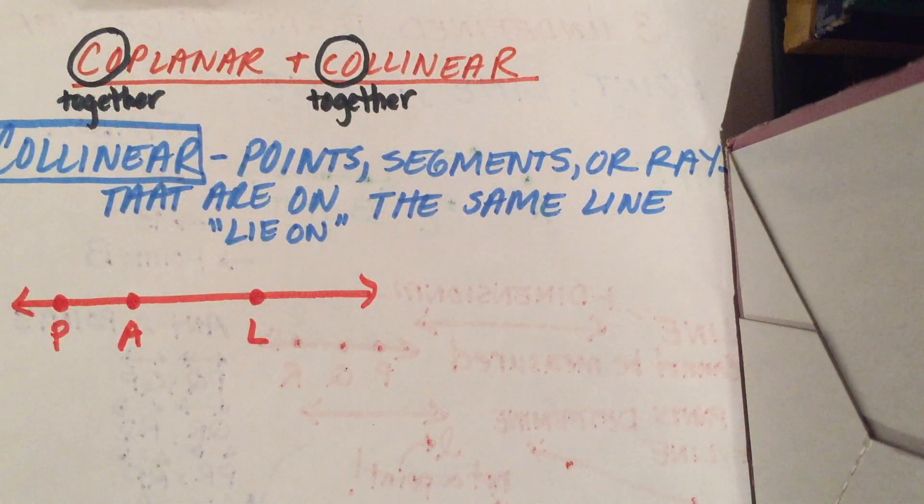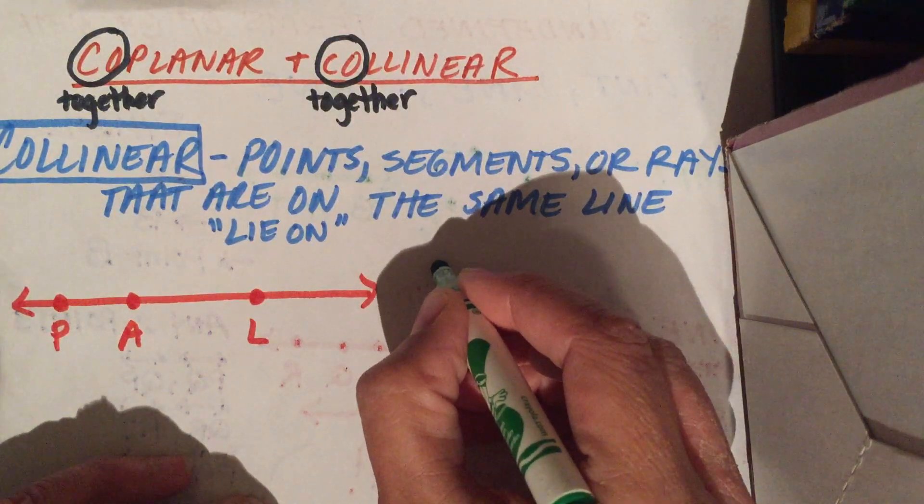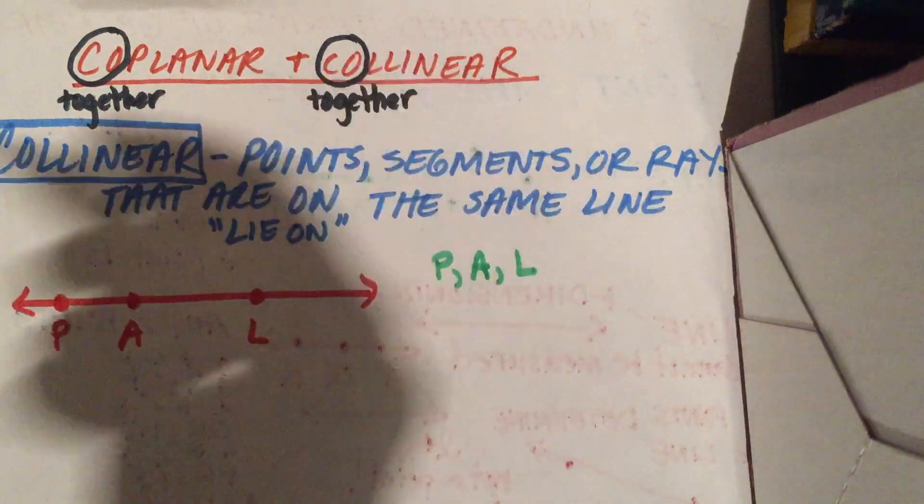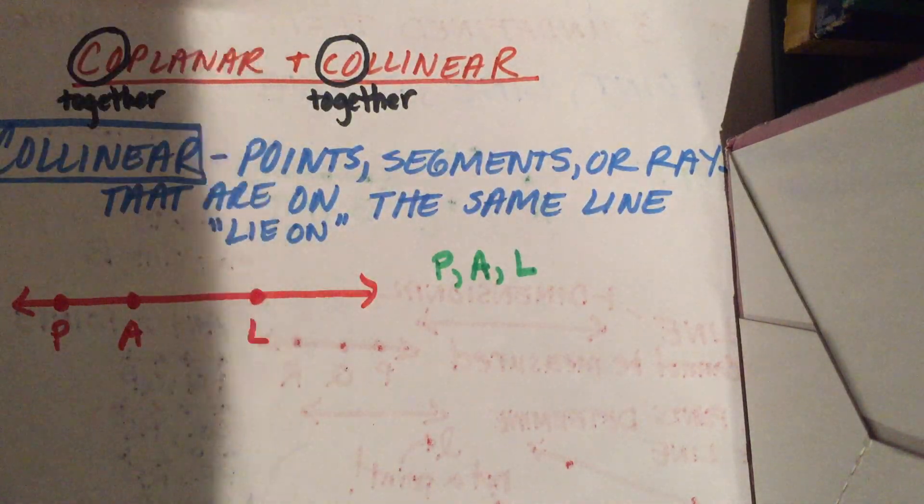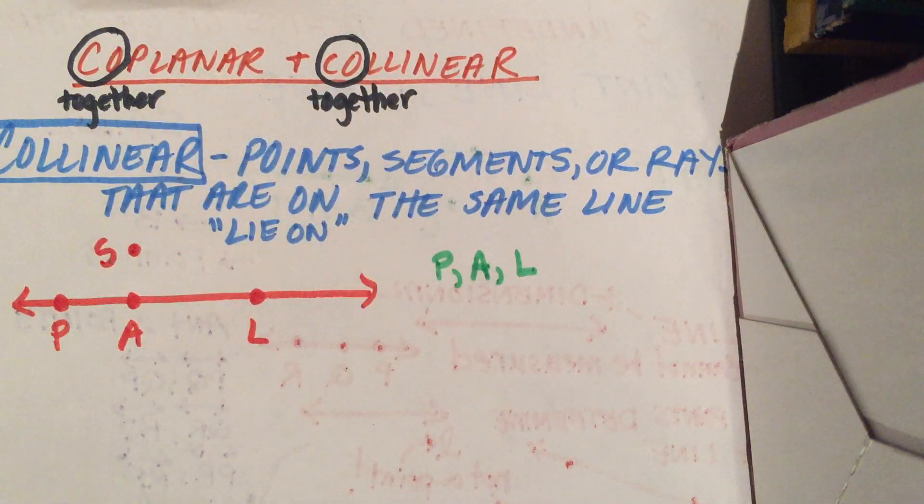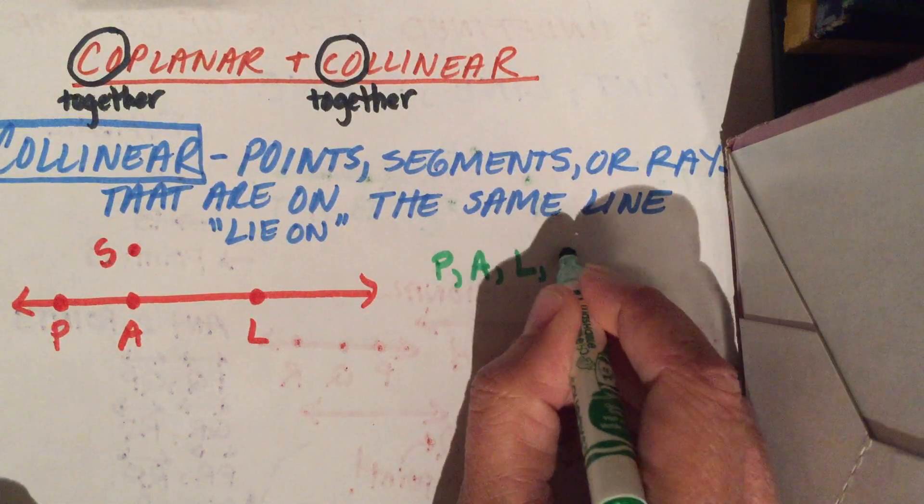So let's look at a couple of examples here. First of all, let's look at the points P, A, and L. I'm going to add another point here, an S up there. So we have P, A, L, S.